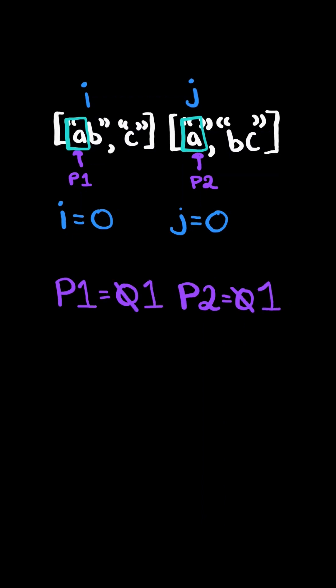We increment P1 and P2. If the pointer equals the length of the string, then we increment the array index and reset the string index to 0. And let's not forget to move P1 to index 1.